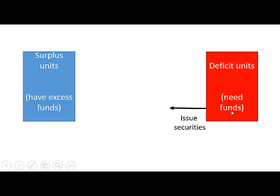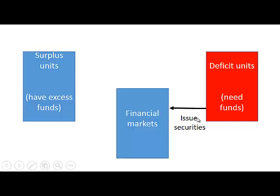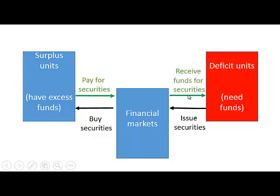To obtain funds, deficit units can issue securities on the financial market, and the surplus units can buy these securities. The surplus units pay for the securities, providing funds to the deficit units, which then use those funds to finance their deficit.